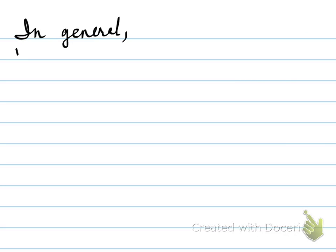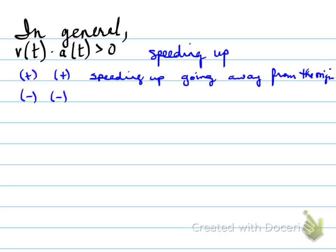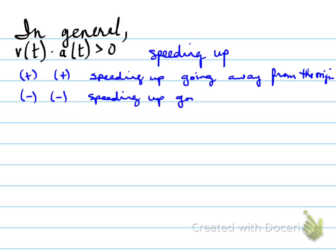In general, when determining whether a car is speeding up or slowing down, we need to compare the velocity with the acceleration. For an object to be speeding up, you need positive velocity and positive acceleration, or negative velocity and negative acceleration. Positive velocity with positive acceleration means speeding up going away from the origin. Negative velocity with negative acceleration also means speeding up, but going towards the origin.